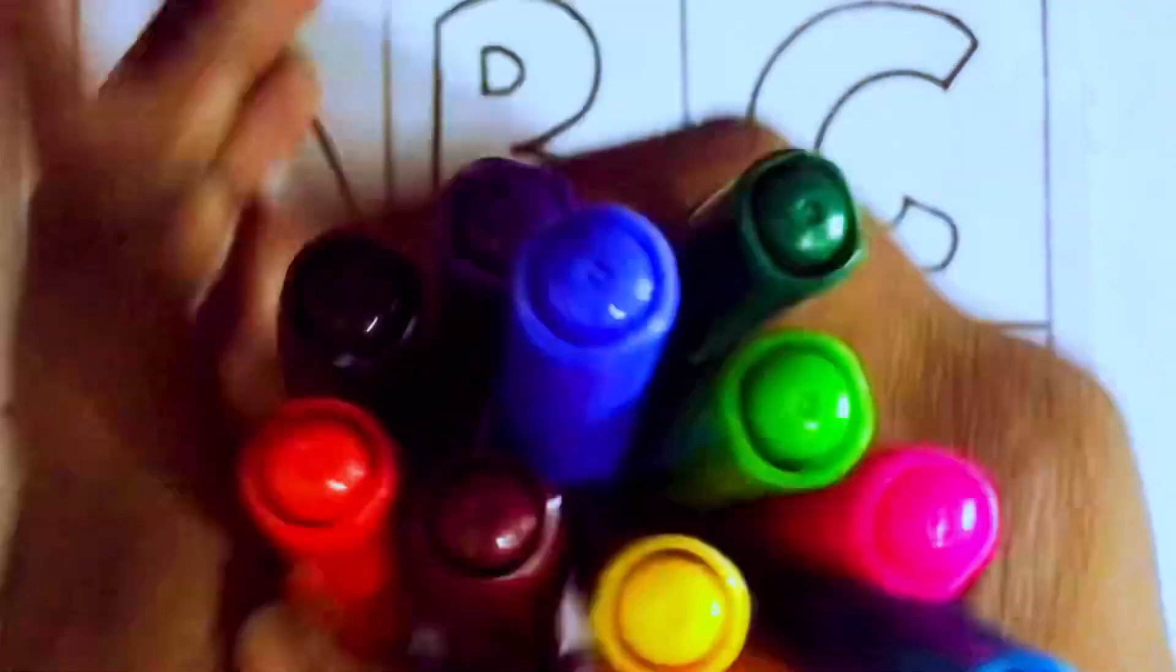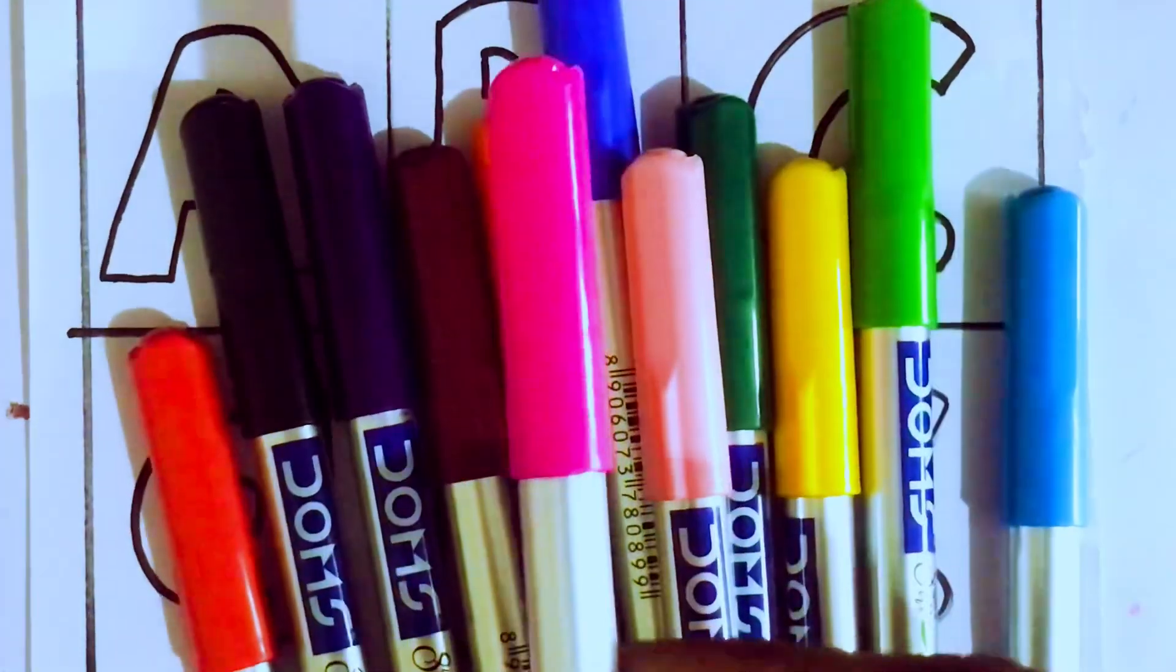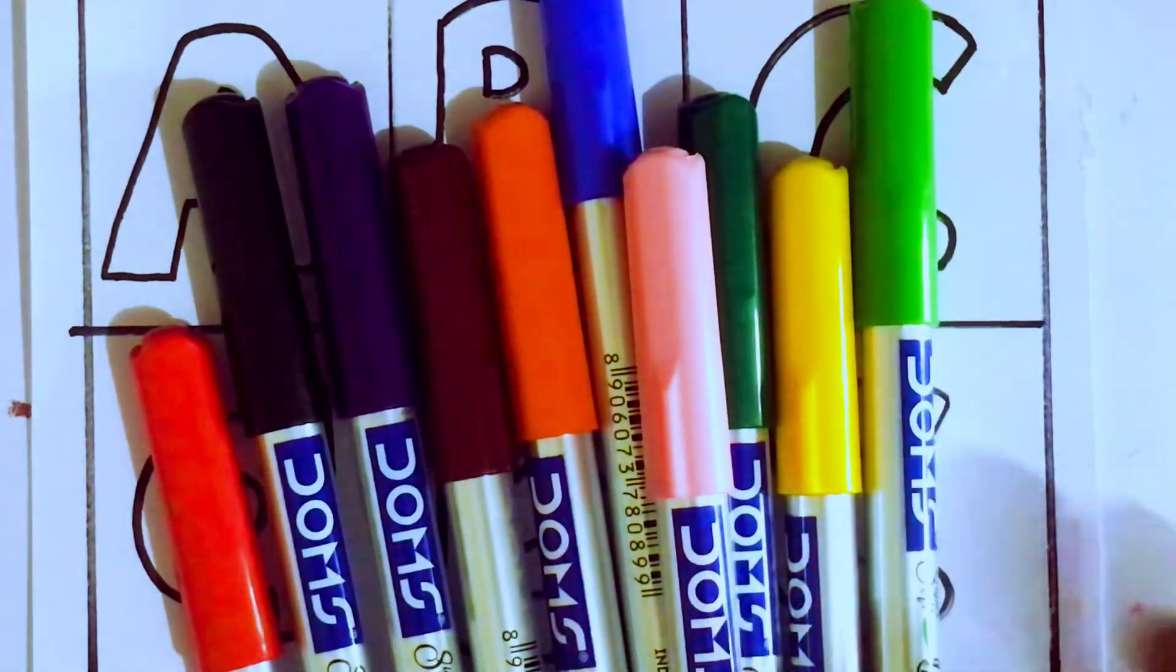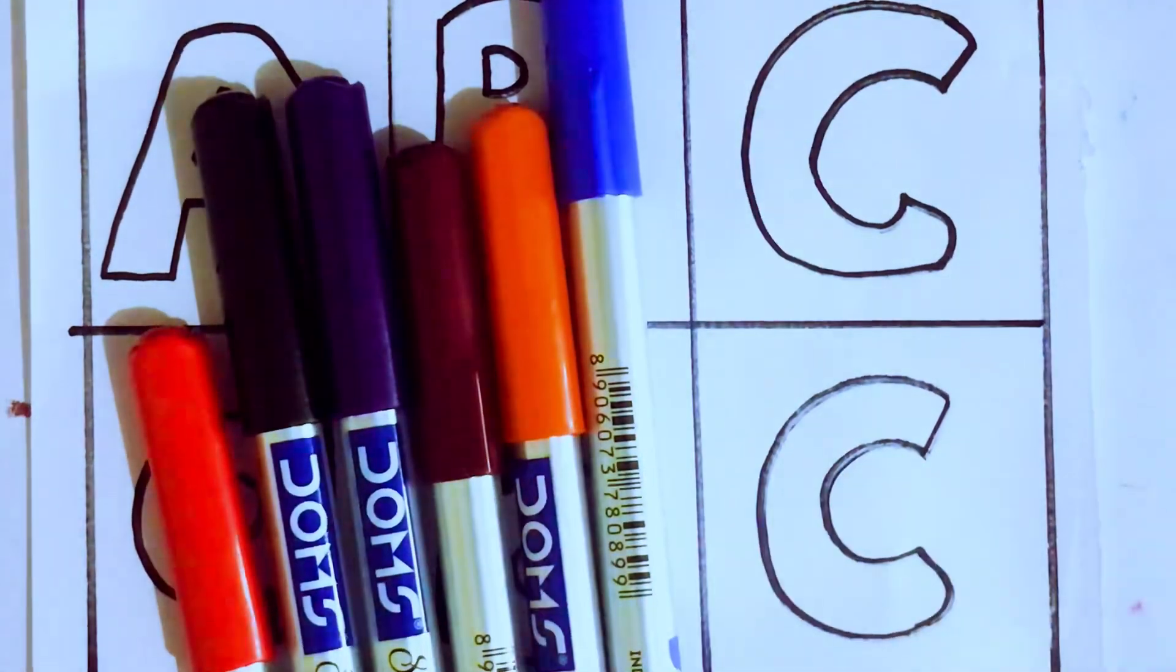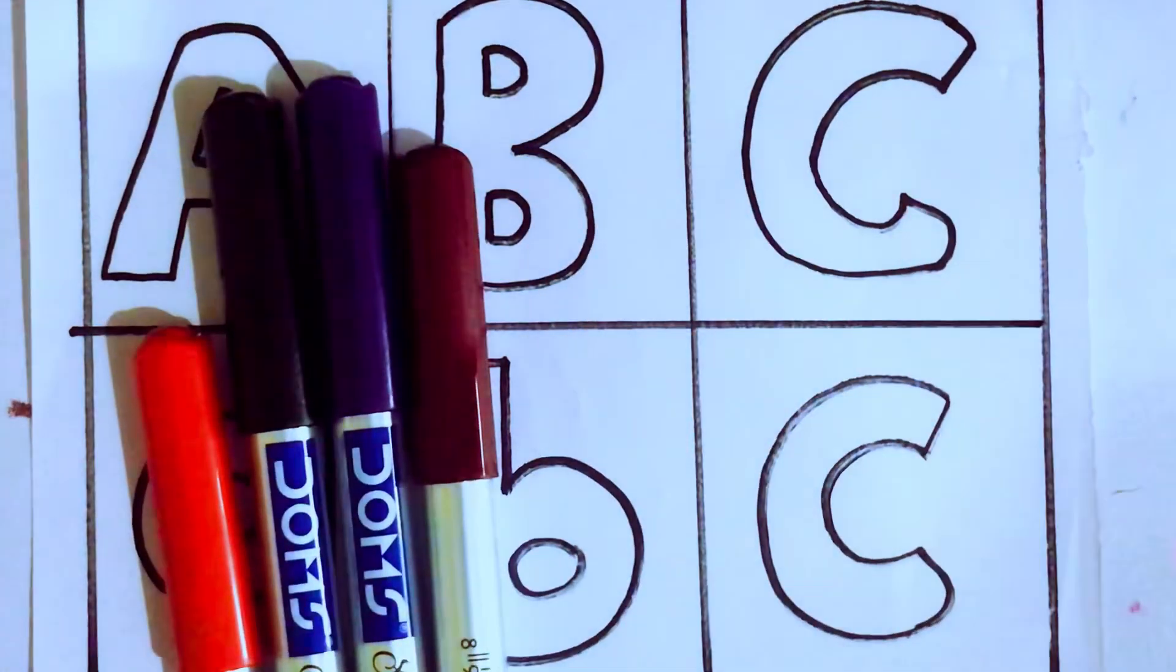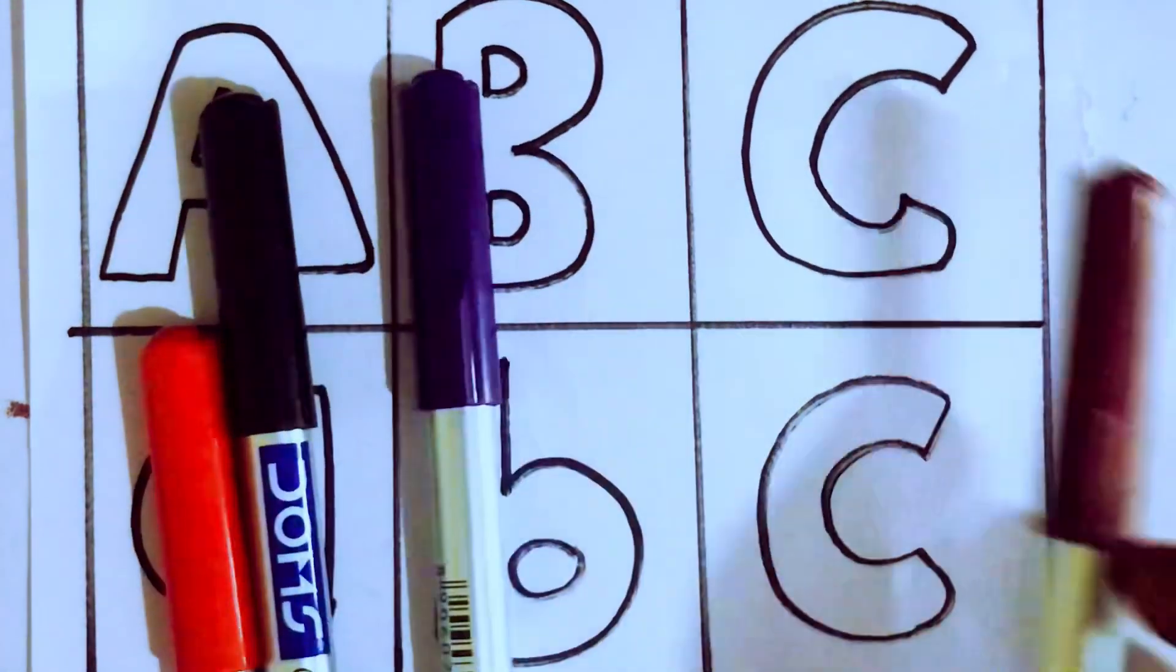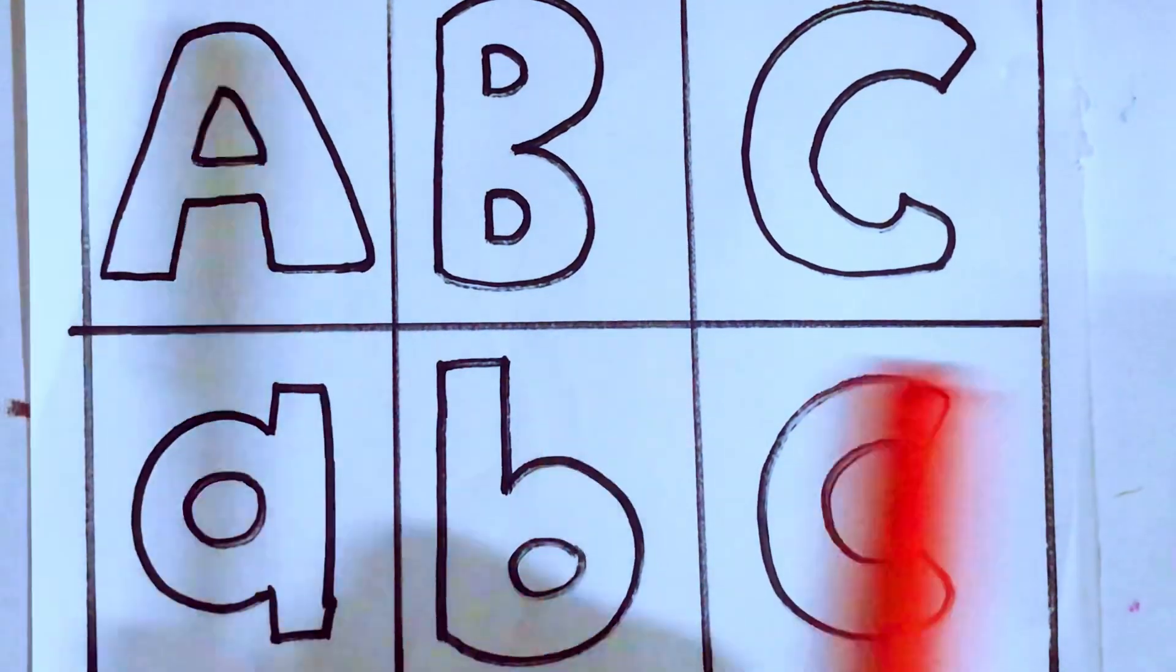Let's learn some colors. Here are the color pencils. Let's learn the names. Pink color, sky blue color, green color, yellow color, pink color, green color, blue color, orange color, brown color, purple color, black color and red color.